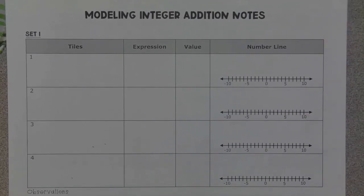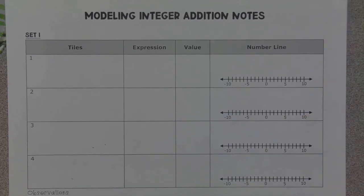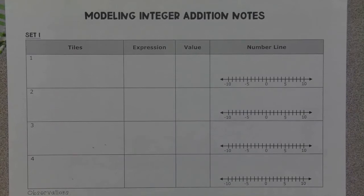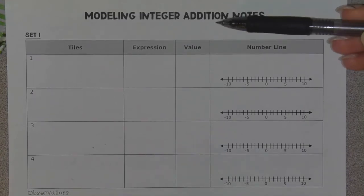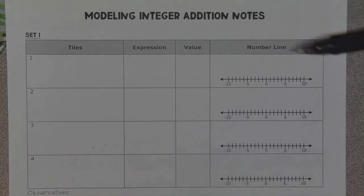Let's talk about what it looks like to model integer addition. Previously we've talked about that integers are a set of whole numbers and their opposites — positive and negative numbers and the number zero are all integers. We're just going to look at what it looks like when we add two different integers together.